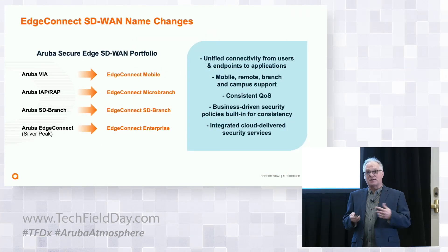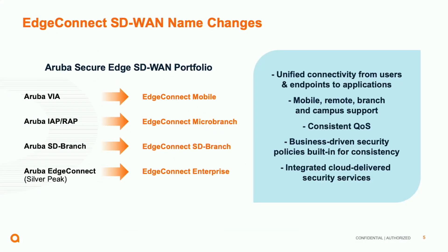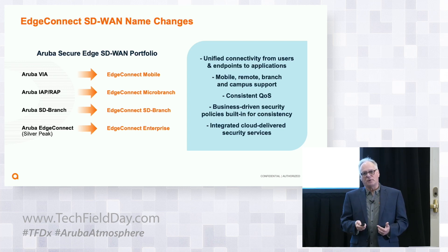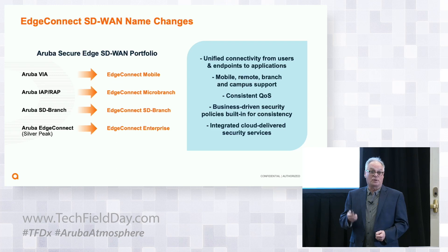This is just a quick glossary of that branding. Edge Connect Mobile is the VIA client. Edge Connect Micro Branch are the remote access points that run AOS 10 with the new SD-WAN feature set added. We're not changing the SKUs or model numbers — think of Edge Connect Micro Branch as a category. Edge Connect SD Branch is the Aruba-developed SD-WAN that runs on several different platform sizes. Edge Connect Enterprise is the Silver Peak software and hardware, available on six hardware platforms, as a virtual machine on a customer's server, or instantiated in the cloud on AWS, Azure, Google Cloud, and Oracle Cloud infrastructure.